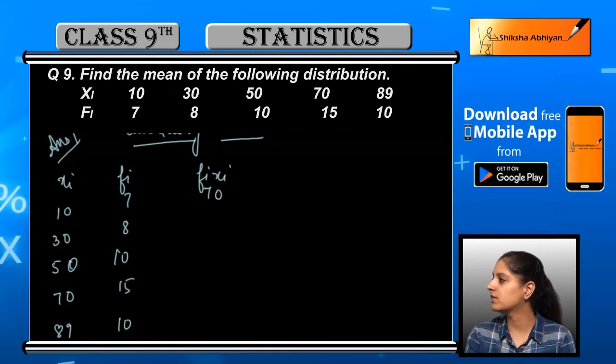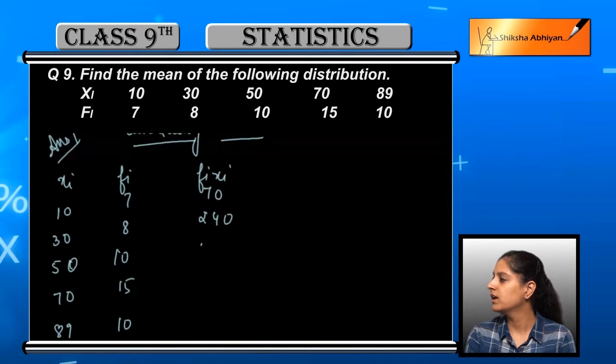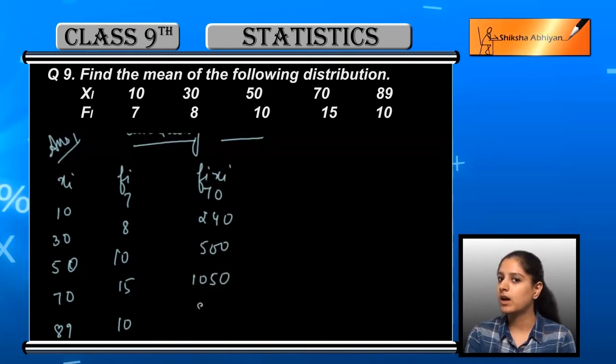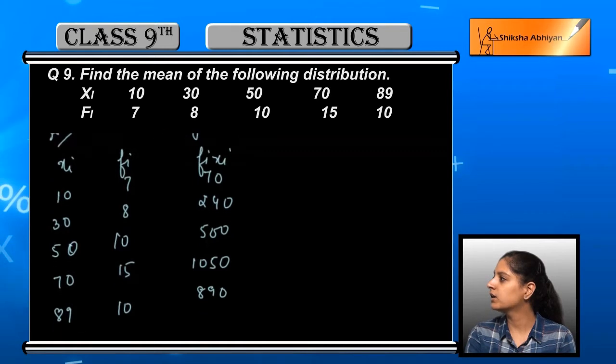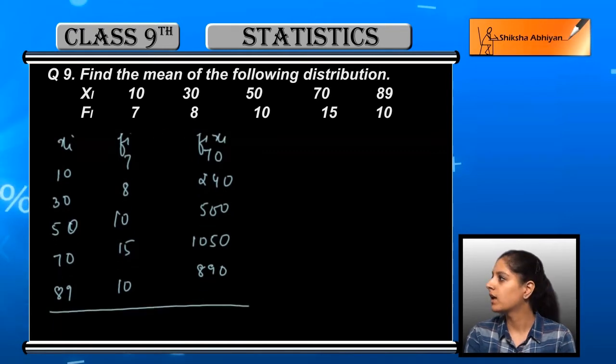So 10 into 7 is 70, 30 into 8 is 240, 50 into 10 is 500, 70 into 15 is 1050, and 89 into 10 is 890. Summing these gives us 2750.